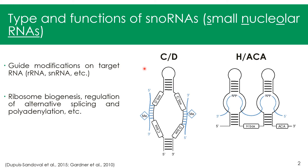SNORNAs are small non-coding RNAs that mostly guide modifications on their target RNA to which they bind. There are basically two types of SNORNAs: CD box SNORNAs and HACA box SNORNAs, which guide a different modification on their target RNA.